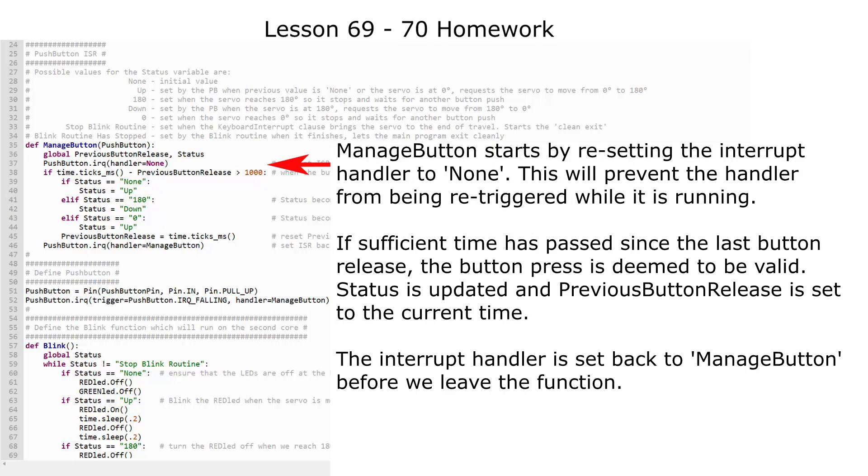The manage button function is the handler or interrupt service routine for the push button. Manage button starts by resetting the interrupt handler to none. This will prevent the handler from being re-triggered while it's running. If sufficient time has passed since the last button release, the button press is deemed to be valid. Status is updated, and previous button release is set to the current time. The interrupt handler is set back to manage button before we leave the function.